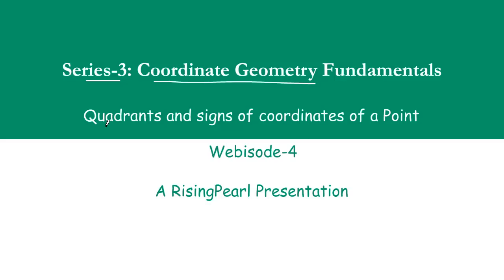Today we talk about quadrants and signs of coordinates of a point. We will see that your quadrants, which are formed by your axes - x-axis and y-axis - what is the relationship between the quadrants and the signs of coordinates of a point? Now we will get started.